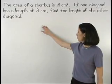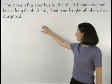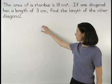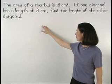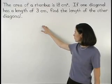The area of a rhombus is 18 square centimeters. If one diagonal has a length of 3 centimeters, find the length of the other diagonal.